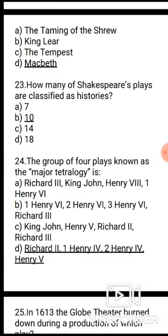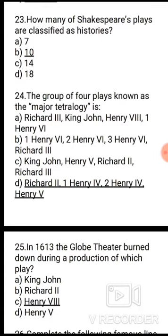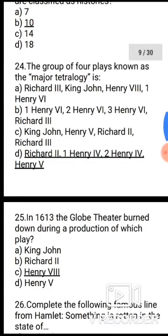Question 24: The group of four plays known as the major tetralogy is — option D: Richard II, Henry IV Part 1, Henry IV Part 2, Henry V. That is the correct answer.